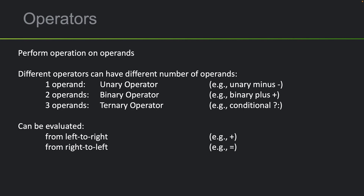Operators can take different numbers of operands. If it takes one operand, it's known as a unary operator. If it takes two operands, it's a binary operator. And if it takes three operands, it's known as a ternary operator.